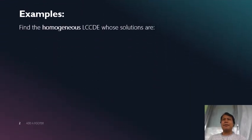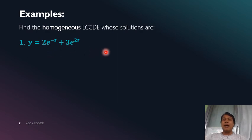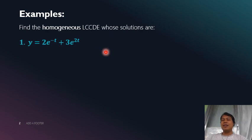So in our previous topics, we are given a certain differential equation, and then we find its solution. But now we'll do the opposite. We are given a known solution, and then we'll be finding the differential equation that has that given solution. Let's go to the next slide for some examples.